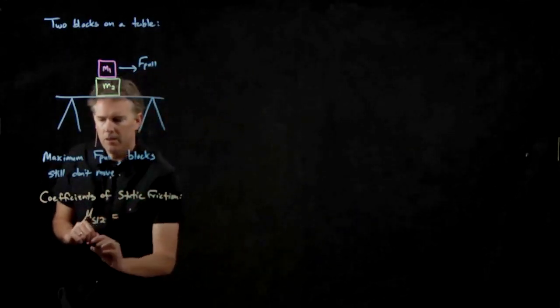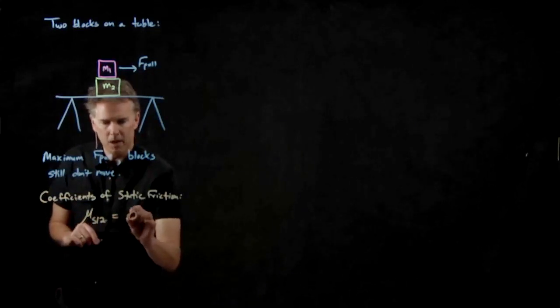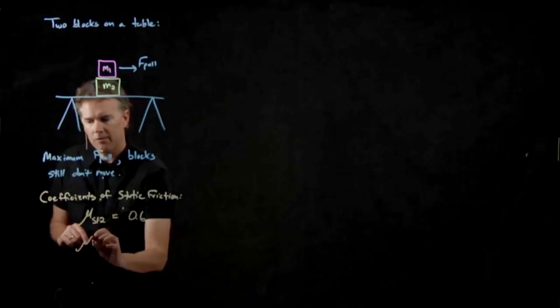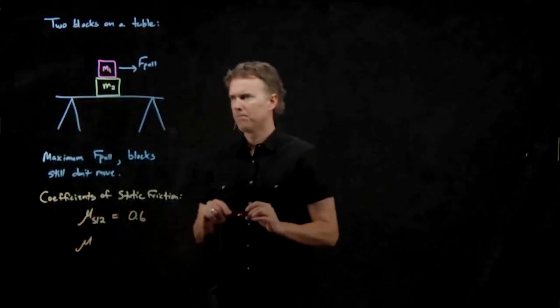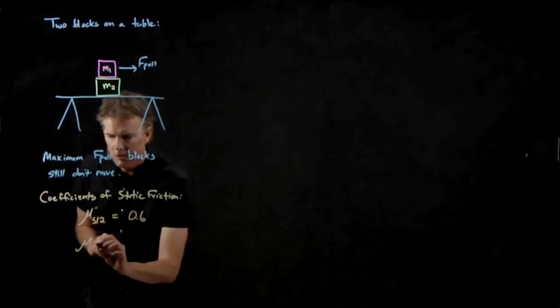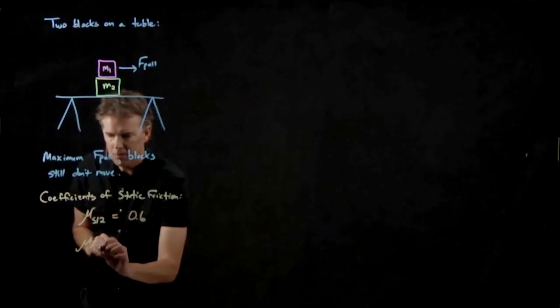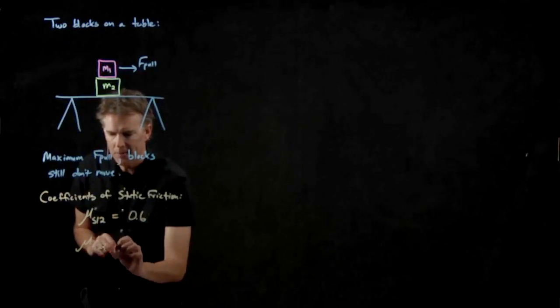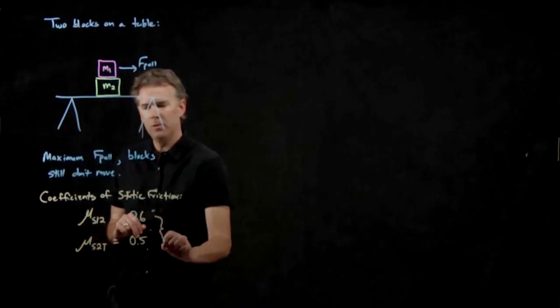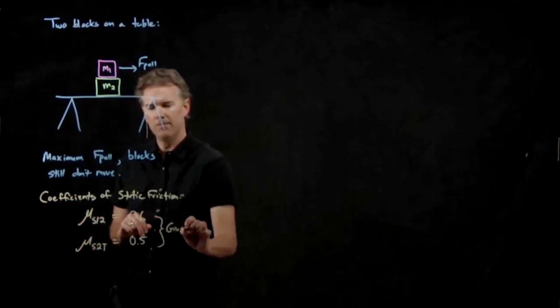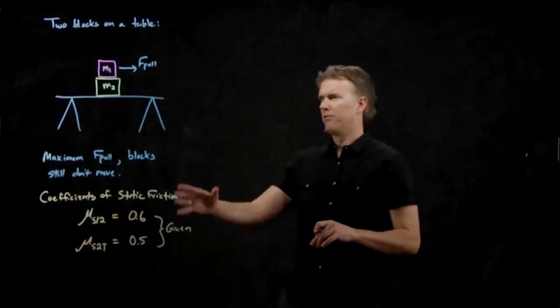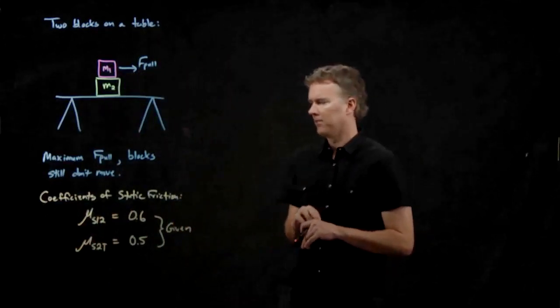And we can just make something up. How about 0.6? And then there is another coefficient of friction between m2 and the table. So this would be static friction between block two and the table, and maybe that is 0.5. So these you would be given in the problem. And if you had numbers for there, you would also be given the masses and so forth.